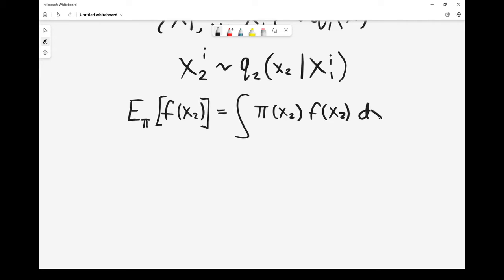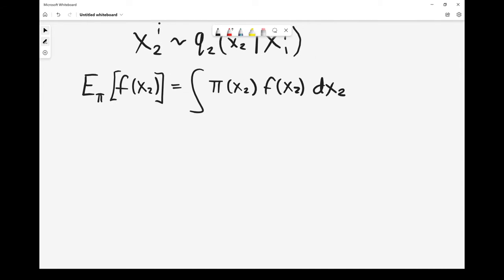We've got our second set of samples. So we might think at this point that we could just do standard importance sampling, which we've already seen. We would rewrite this integral to be an importance weight, a function of x2, multiplied by f(x2), and then multiplied by our proposal for x2.